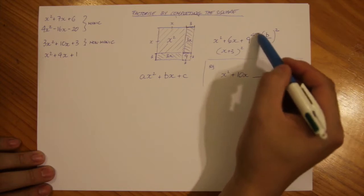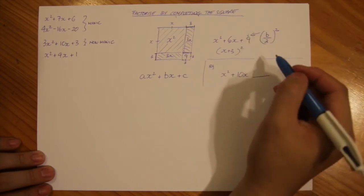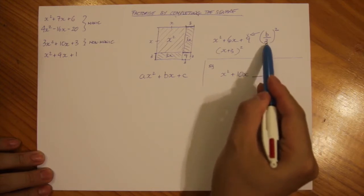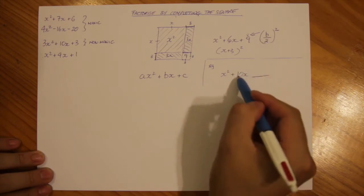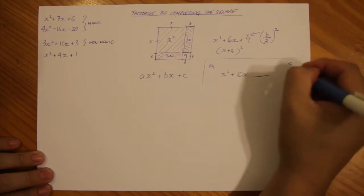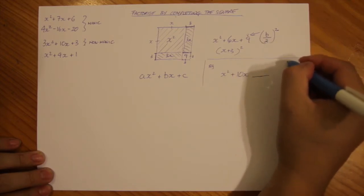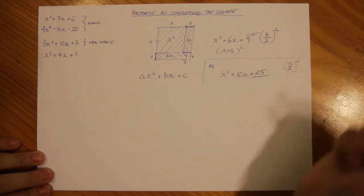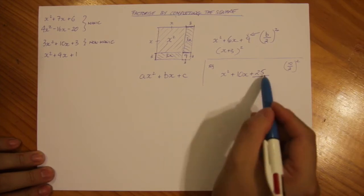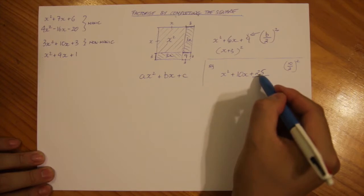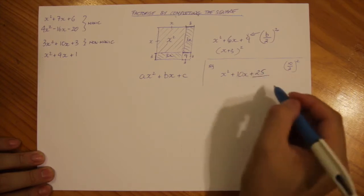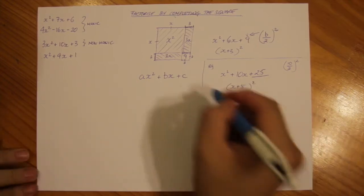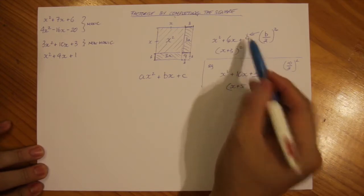So I've created a little formula: take b, divide by 2, then square it, to work out the third term needed to complete the square. Going back to the x squared plus 10x example: b is 10, so 10 divided by 2 is 5, and then 5 squared is 25. This is a perfect square — factors of 25 that add up to 10 are 5 and 5, so we have x plus 5 squared. That's exactly what we want.